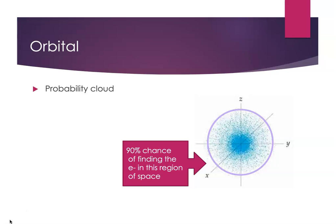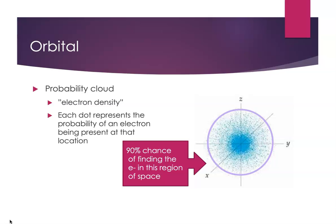Notice that we have a lot more dots close to the center — close to the nucleus. We can talk about electron density: where are we most likely to find an electron? Each dot represents the probability of an electron being present at that location. The probability map, which is what we're calling an orbital, says we're more likely to find electrons closer to the nucleus than farther away. We can show this 90% probability map — 90% of the time we're likely to find the electron in this space. We can't say where the electron is at any particular moment. What we can say is time-average: here's where we're likely to find it. It might be outside of that boundary, but chances are it's inside.